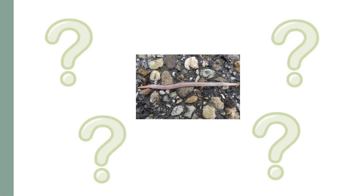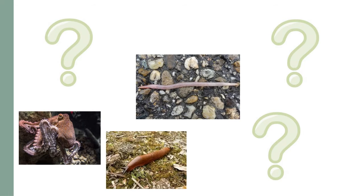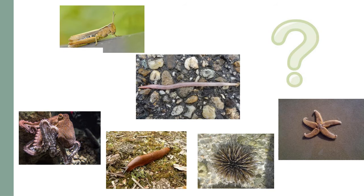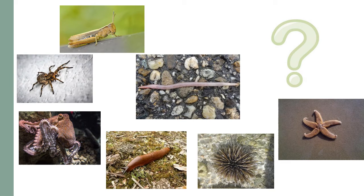Annelids such as earthworms have long segmented bodies. Mollusks like octopus and slugs have soft unsegmented bodies and are often found in water or damp habitats. Echinoderms like the sea urchin and starfish have calcareous skeletons — this hard structure allows them movement and protection.